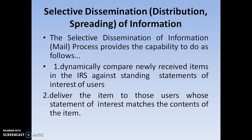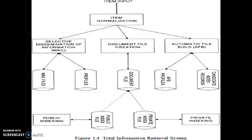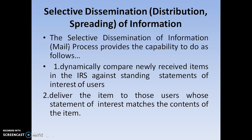The next part is selective dissemination of information. Looking at this diagram, the first component is selective dissemination of information. It dynamically compares newly received items against existing items. Whatever items match what the user searches, only those matched items are displayed and delivered to the user. That is the selective dissemination of information.